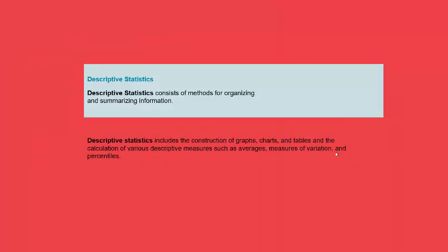We're going to rely very heavily on technology to help us find some of these numerical measures. This section is really what we call descriptive statistics, section one. Descriptive statistics consists of methods for organizing and summarizing information. You want to take raw data in this section and turn it into consumable information. Descriptive statistics include the construction of graphs, charts, and tables, and the calculation of descriptive measures such as what we call averages, measures of variation, and then percentiles.